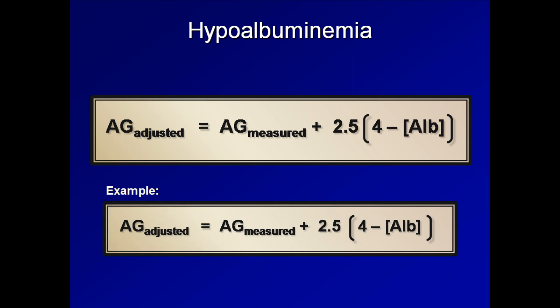Another way to look for this issue would be to use this equation. So, for example, if the measured anion gap is 14, you would add 2.5 times 4 minus 1.5. This is approximately 20, which would more than likely trigger additional investigation. The adjusted anion gap essentially tells us what the anion gap would be if the patient had a normal albumin.